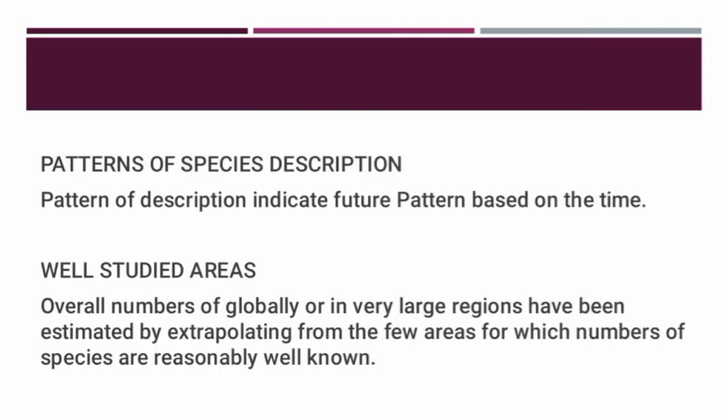The third method is Pattern of Species Description, which indicates future patterns based on the type of description trends. The fourth method is well-studied areas, where the overall number of species globally or in very large regions has been estimated by extrapolating from the few areas for which numbers of species are reasonably well-known.